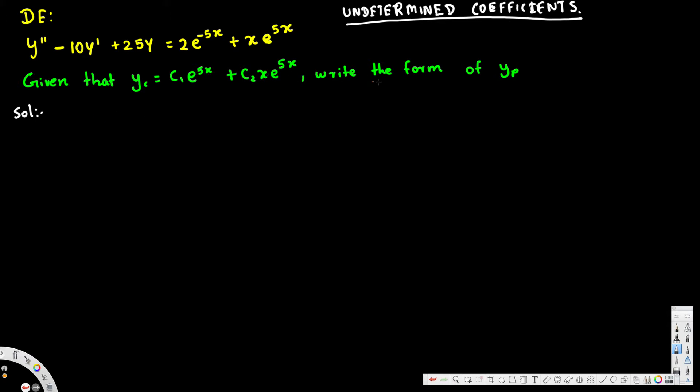We're trying to find the particular solution yp. We have the complementary solution provided. To solve a general solution, we need both a complementary solution and a particular solution. Since we have the complementary solution, we don't have to find it again—it's already done.